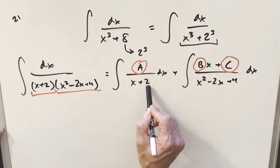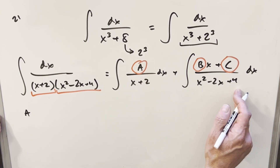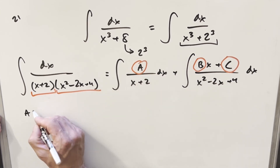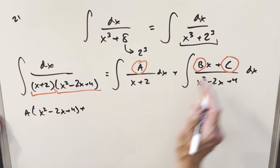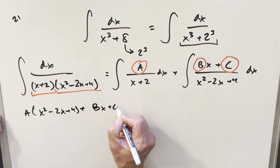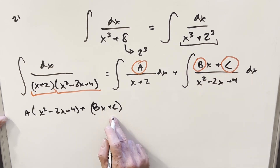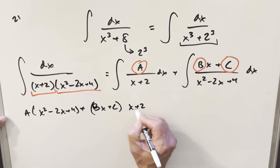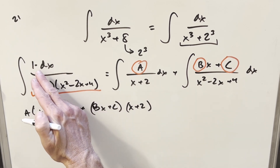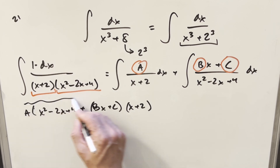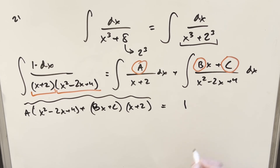To put it back together, we want a common denominator. So I multiply the numerator and denominator of the first fraction by x squared minus 2x plus 4, giving A times x squared minus 2x plus 4 in the numerator. Then for the second fraction, multiplying by x plus 2 gives Bx plus C times x plus 2. Since the original numerator is just 1, all of this equals 1.